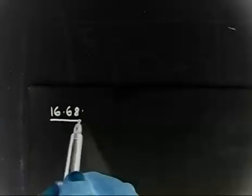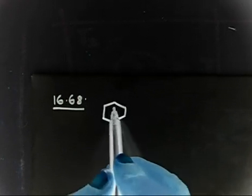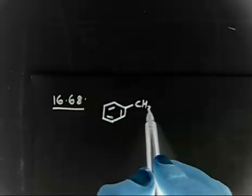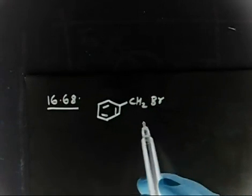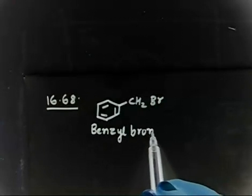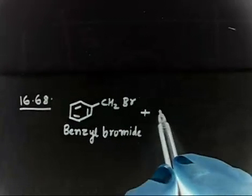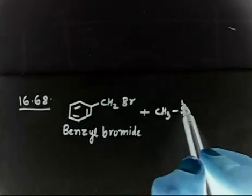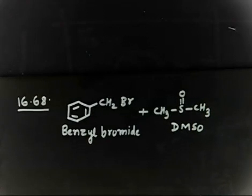Let us discuss problem 16.68. We have benzyl bromide, written as Ph-CH2Br. This group is called the benzyl group. The question says: if you treat benzyl bromide with dimethyl sulfoxide, that is DMSO (CH3-S(O)-CH3),